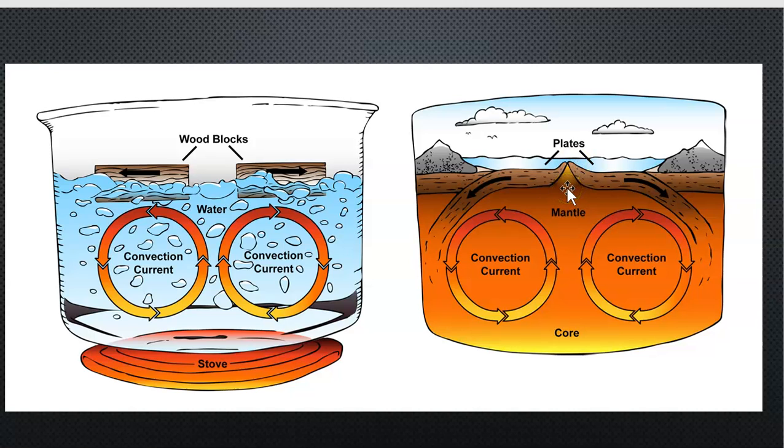Okay so again we've got all this plate movement going on as a result of these convection currents within the mantle. Now this plate movement we said can result in new crust. It can also result in earthquakes. We can have volcanoes as a result of these convection currents and ocean basins.